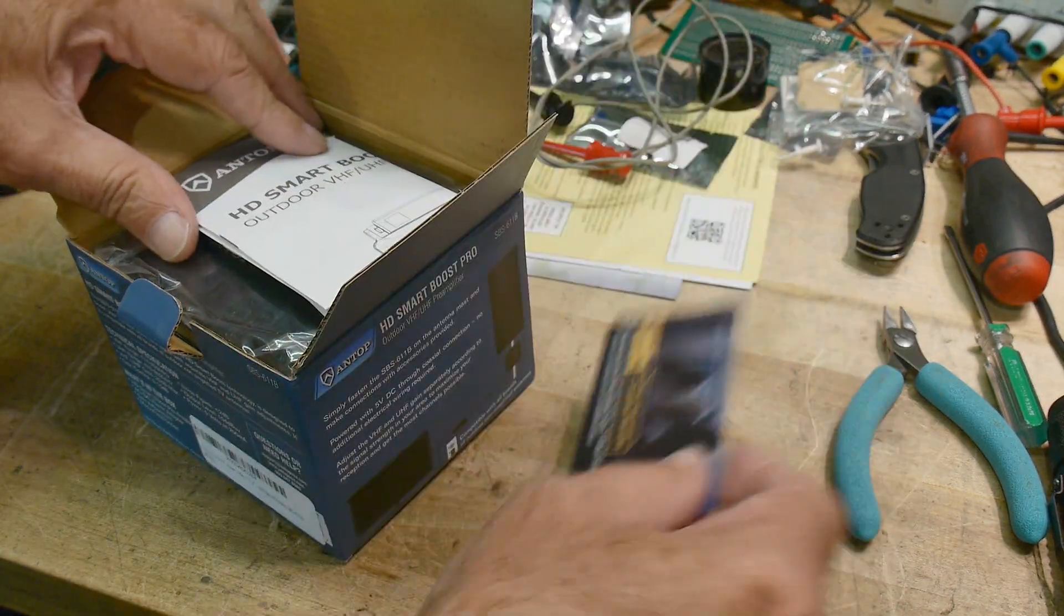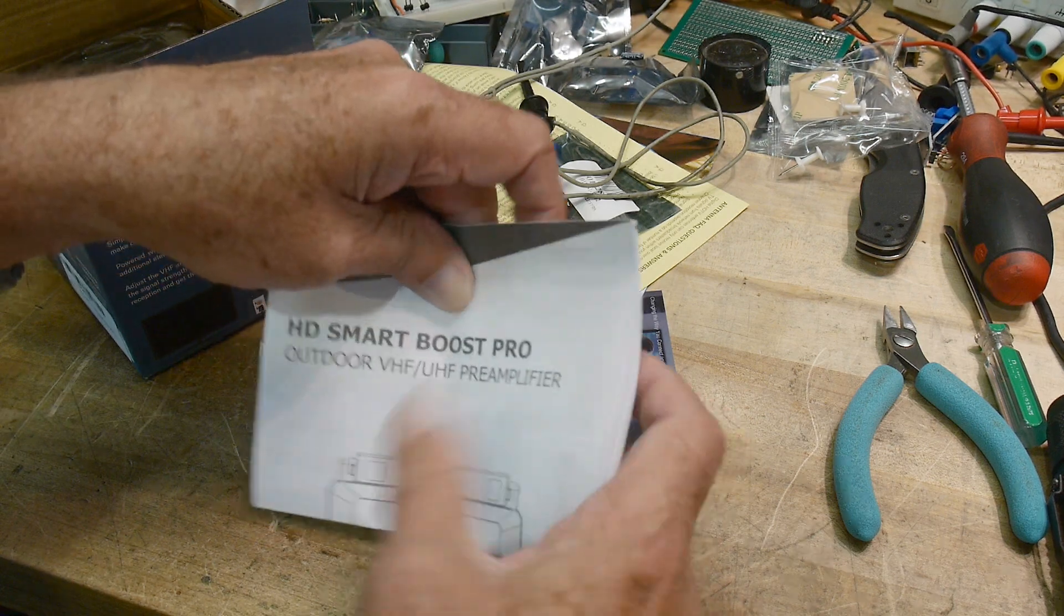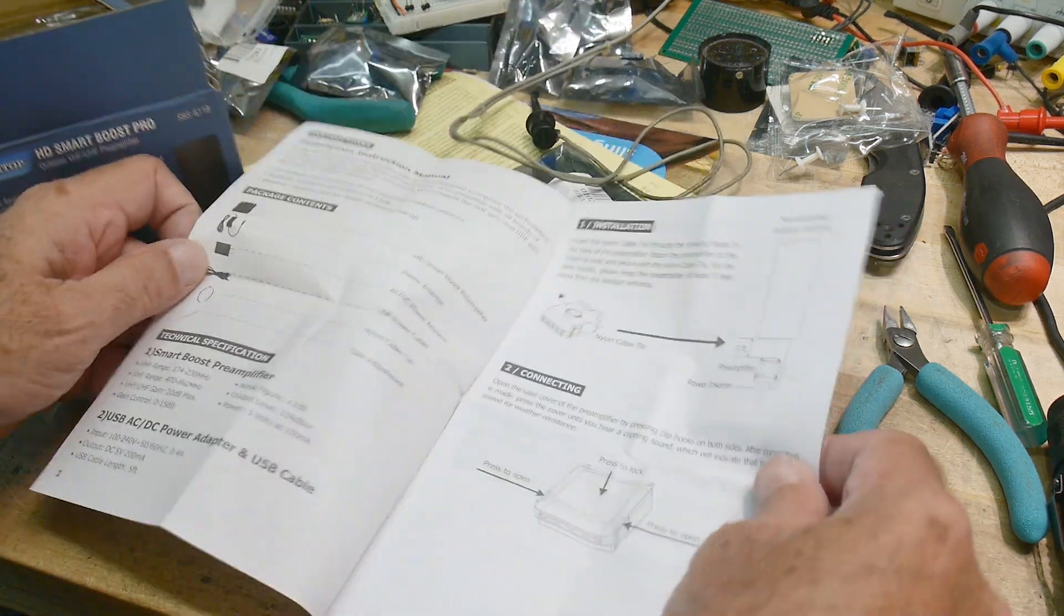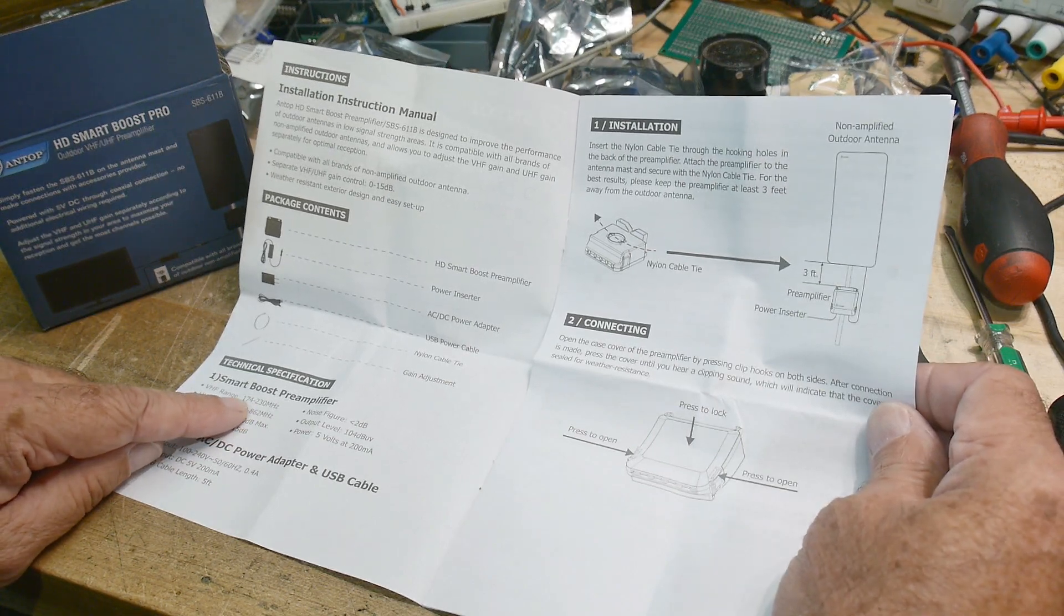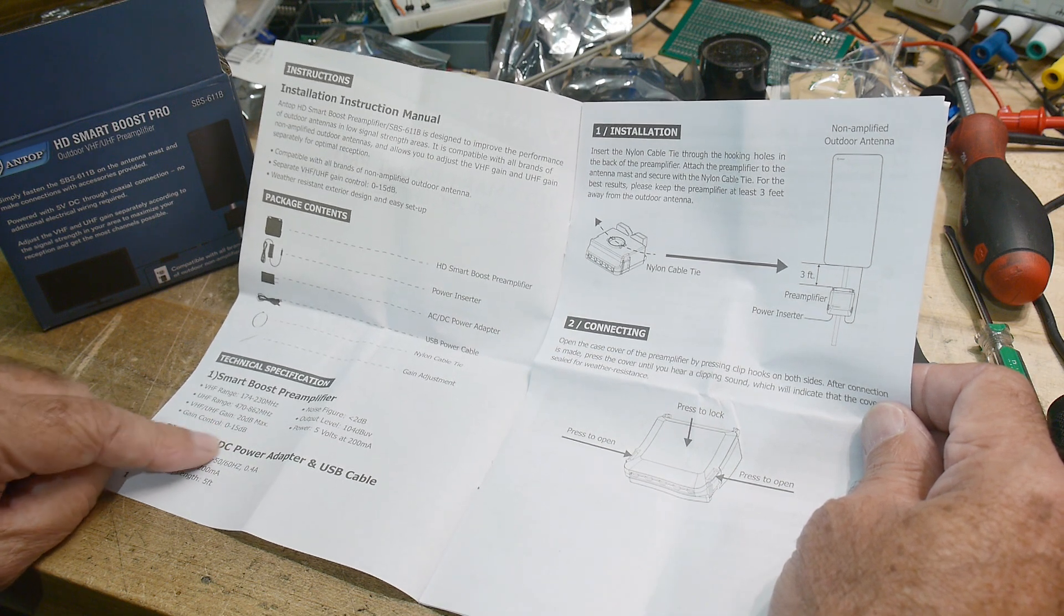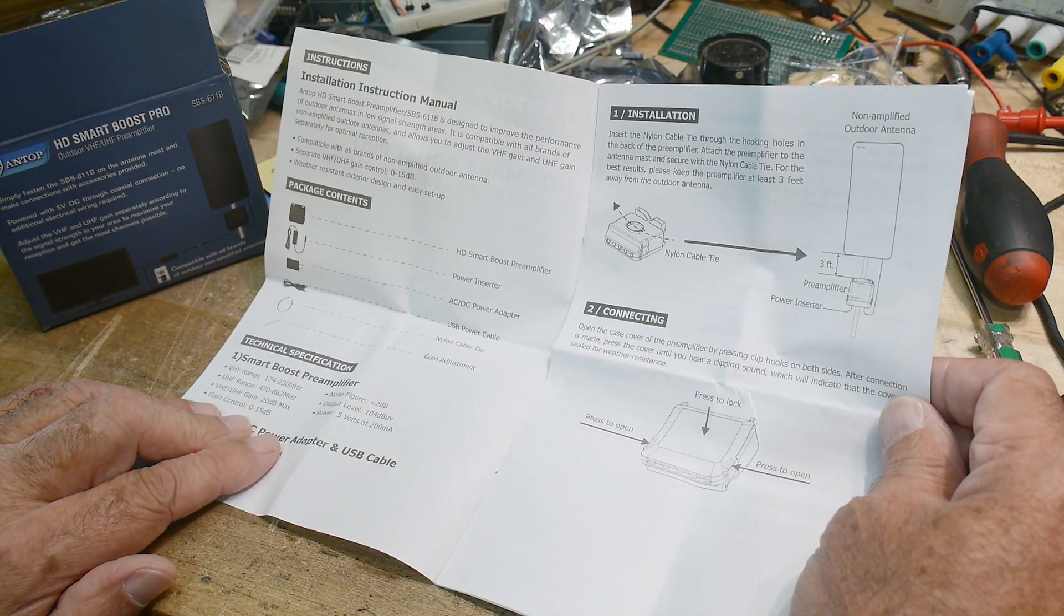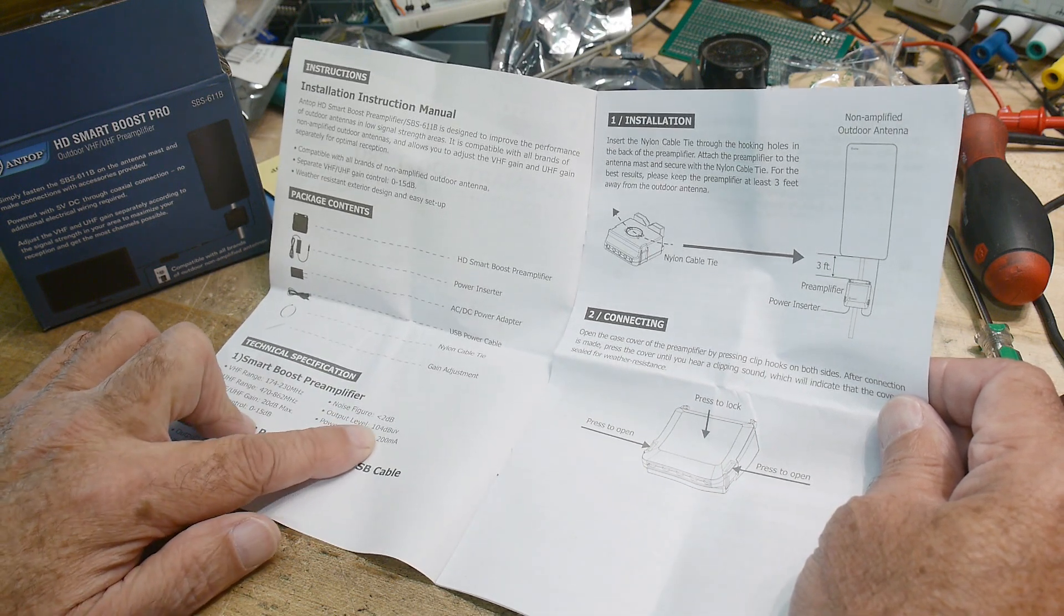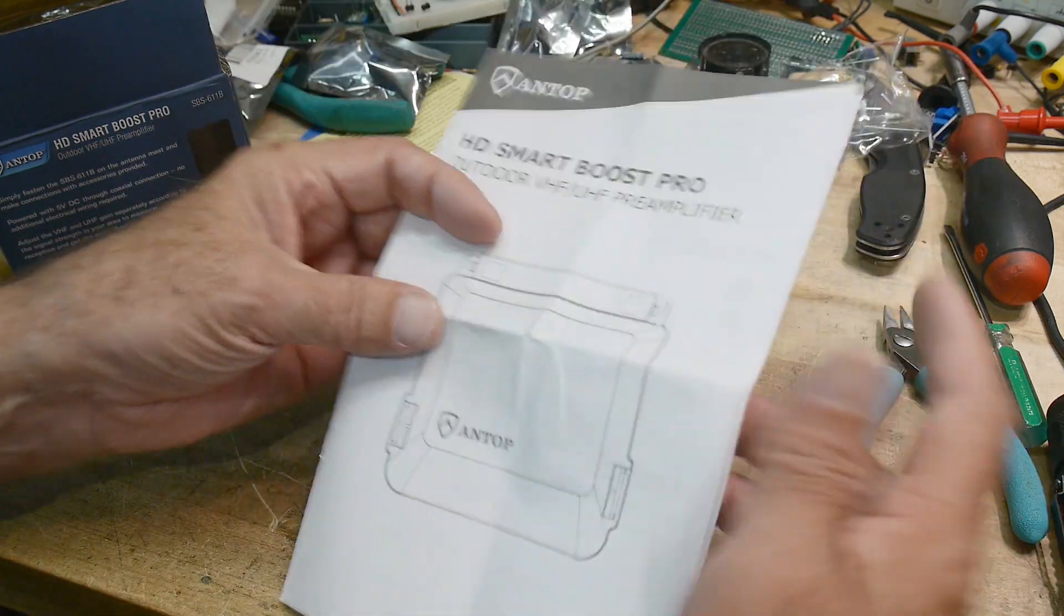Register now for extended warranty. HP Smart Boost outdoor VHF UHF pre-amplifier, 174-230 megahertz, 470-862 megahertz, 20 dB gain. So there you go. Gain control 0-15 dB, noise figure, output level 105 dB microvolts, 5 volts. Okay, let's take a look at it.